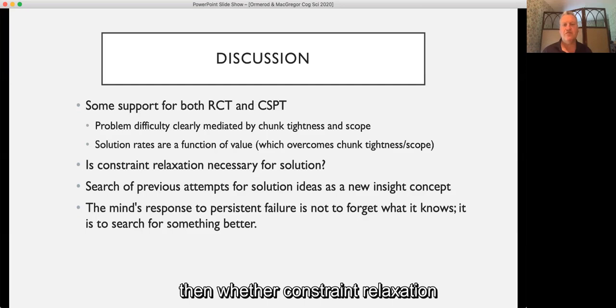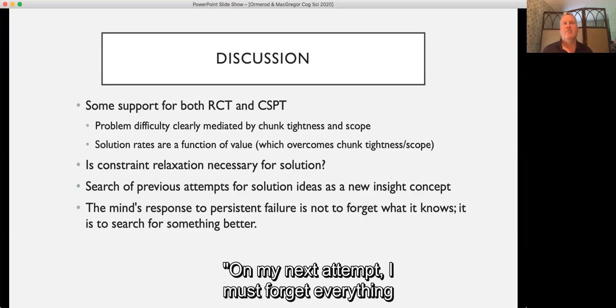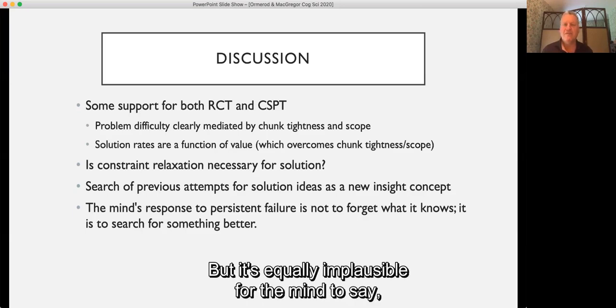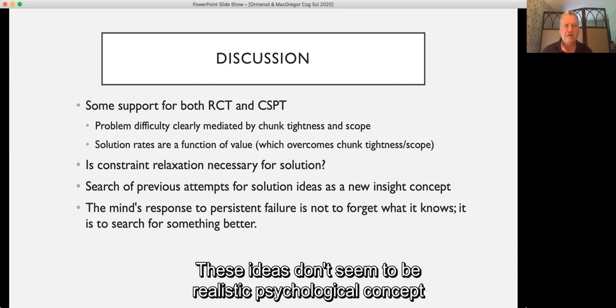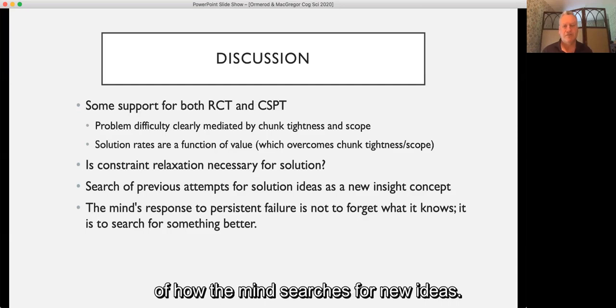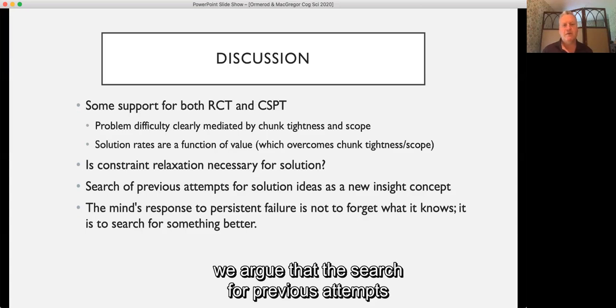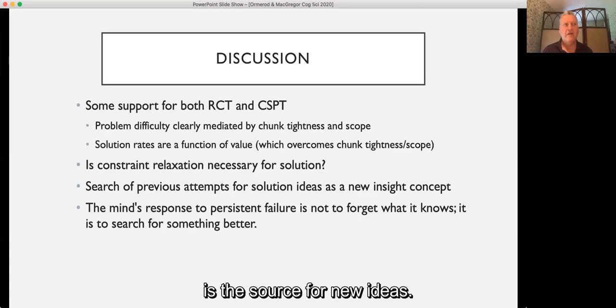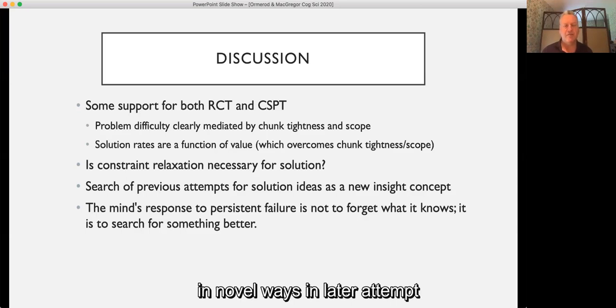The results lead us to question then whether constraint relaxation is really necessary for solution. Is it really necessary to abandon one's knowledge of mathematics or one's desire to make progress? It seems unlikely to us that the mind will say, on my next attempt, I must forget everything I know about maths. But it's equally implausible for the mind to say, on our next attempt, I must try and make less progress than I normally would. These ideas don't seem to be realistic psychological concepts of how the mind searches for new ideas. In this particular problem and in other knowledge-lean problems like this, we argue that the search for previous attempts is the source for new ideas. When you've tried something, even if it's failed, you learn something. And you can reuse the knowledge you've learned in novel ways in later attempts once you've reached impasse.